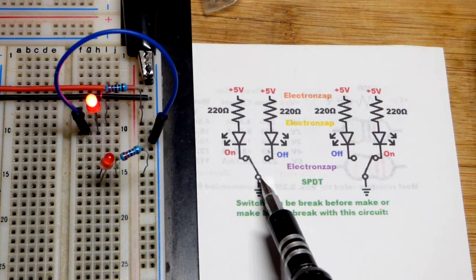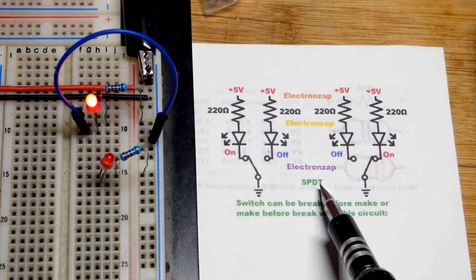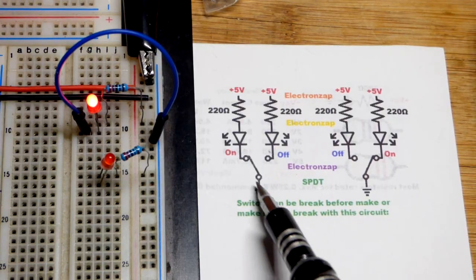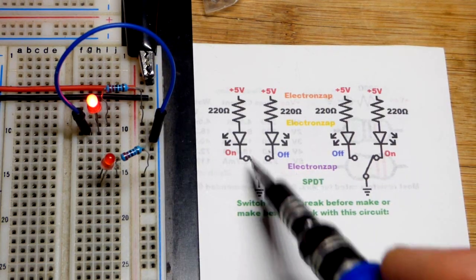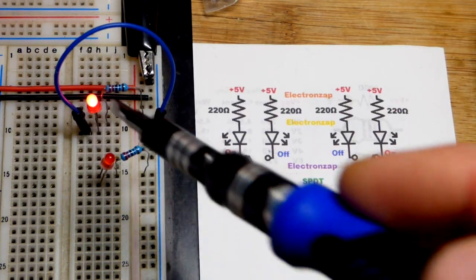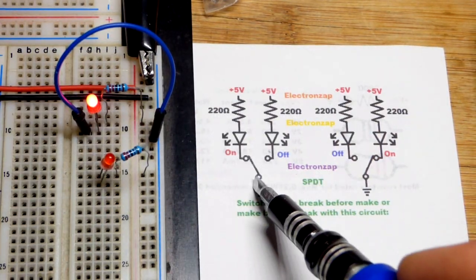So now in this video, we're going to talk about the basic properties of a single pole double throw switch. We have a pole right here, this jumper connected to ground and to the bottom of that LED. That LED is on.